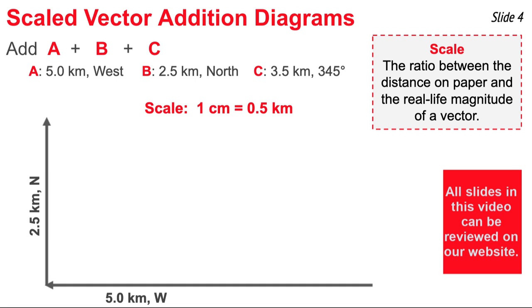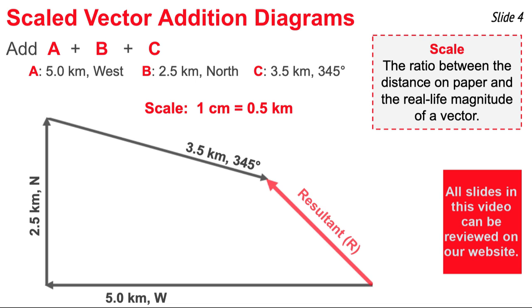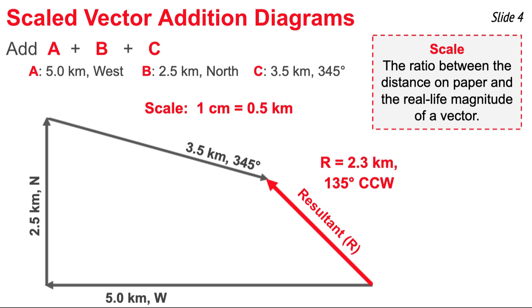Where vector B ends, I draw vector C, starting at the arrowhead of vector B. I draw this vector seven centimeters in length, directed 15 degrees south of east — equivalent to 345 degrees counterclockwise from east. Once all three vectors are drawn, I draw the resultant from the tail of A to the arrowhead of C. The resultant's length is 4.6 centimeters; using the scale I convert that to a real-life magnitude. Then using a protractor, I find the direction — approximately 135 degrees counterclockwise from east. That's how we graphically add vectors A plus B plus C.